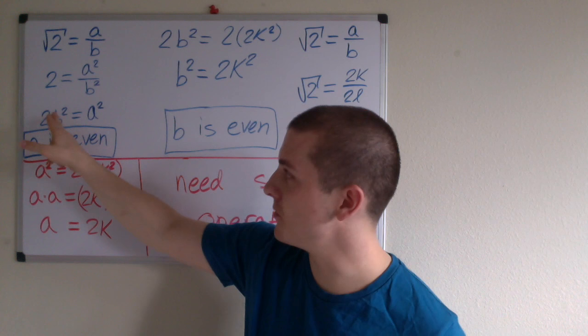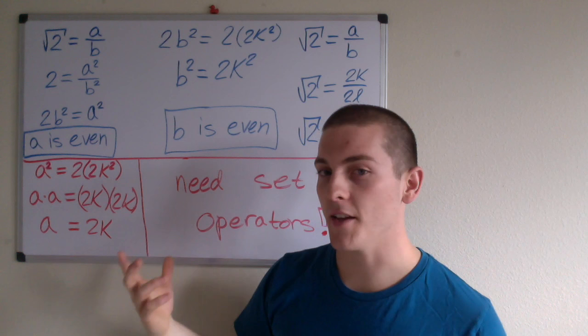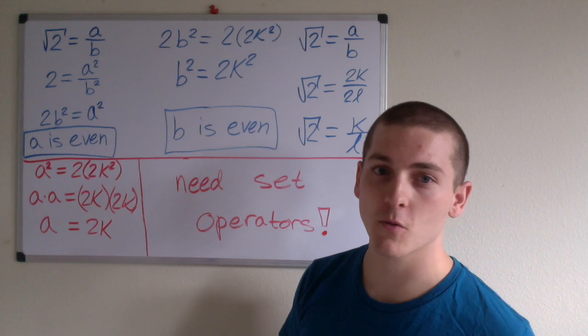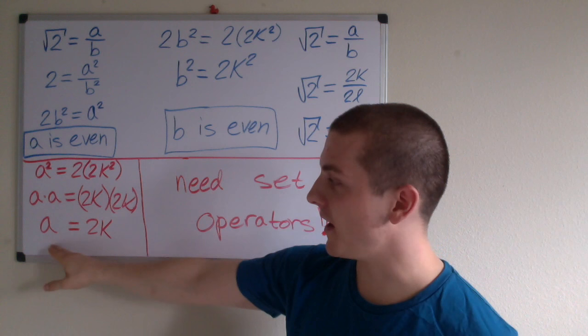Since a squared is even, we know that a is even because a squared equals 2 times some integer. The integer I chose was 2k squared. That means that a times a can be expressed as 2k times 2k, which is to say that a equals 2k.